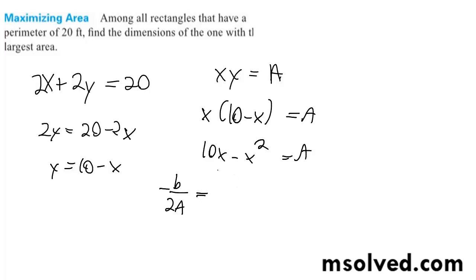So this is b and a here. Opposite of 10, so we get negative 10 over negative 2 times 1, which is negative 2, and we get 5.